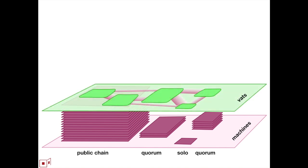We build on top of it. A quorum is just like a classic PBFT with a permissioned validator — a private blockchain, like Hyperledger. We also want to be cross-private and public. We just want to be cross-everything.